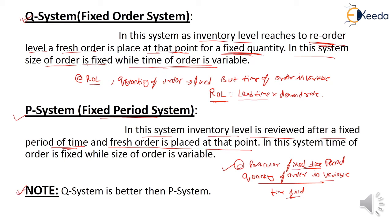One important note: the Q system is better than the P system. In the Q system, when inventory reaches the reorder level, a fresh order is placed immediately. In the P system, a new order is placed only after a fixed time period — so if inventory finishes before that period, the production system shuts down. Therefore, the Q system is better than the P system.